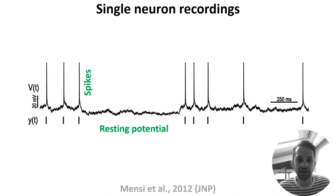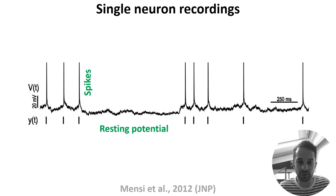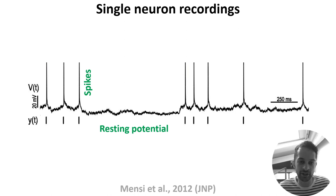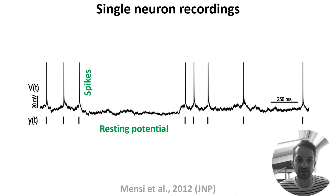From this sort of plot we can observe two features. First, there are these high amplitude one to two millisecond long events, which we call action potentials or spikes. Second, between the spikes the neuron's voltage fluctuates around a baseline value, which we call the resting membrane potential.